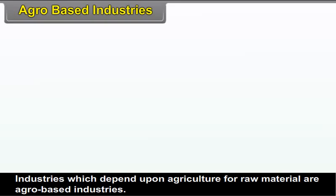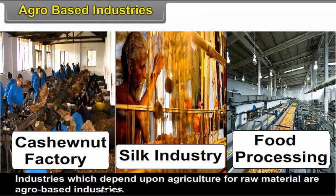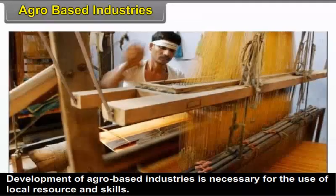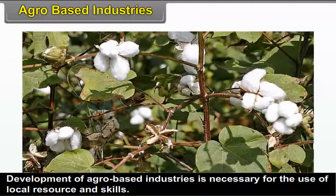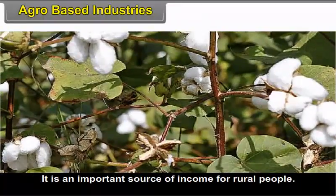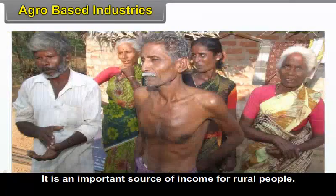3.5 Agro-based industries. Industries which depend upon agriculture for raw material are called agro-based industries. Development of agro-based industries is necessary for the use of local resources and skills. It is an important source of income for rural people.